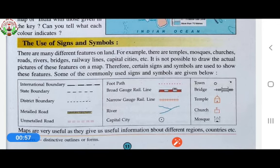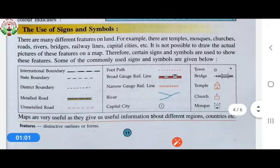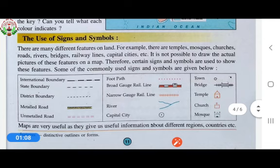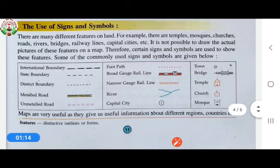there are temples, mosques, churches, roads, rivers, bridges, railway lines, capitals, cities, etc. It is not possible to draw the actual picture of these features on a map.